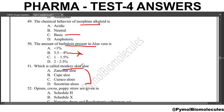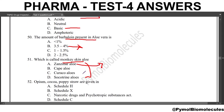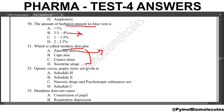Next question: which is called monkey skin aloe? All these species are aloe. The monkey skin aloe is Zanzibar aloe. Cape aloe, Curacao aloe, and Socotrine aloe are all biological sources of aloe. Next question: opium, cocoa, and poppy straw are given in which schedule? The answer is the Narcotic Drugs and Psychotropic Substances Act, known as the NDPS Act.